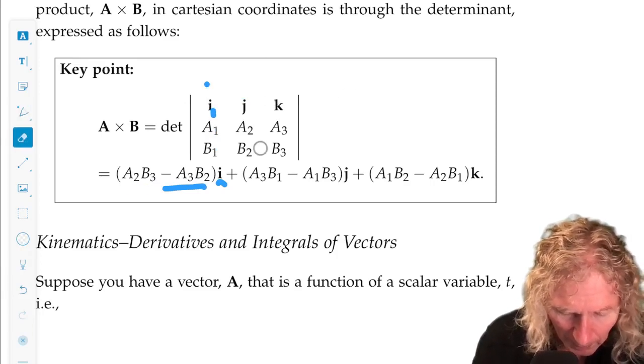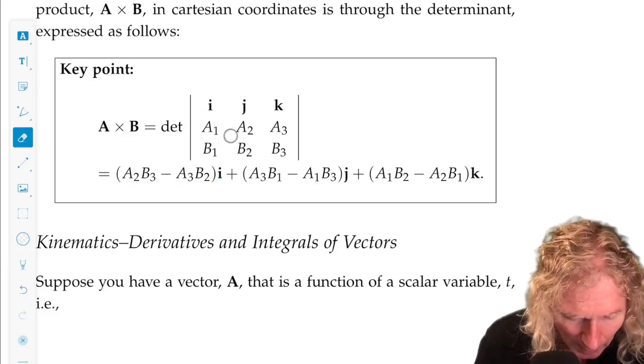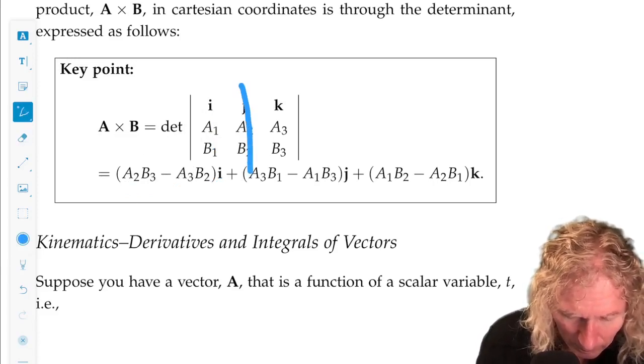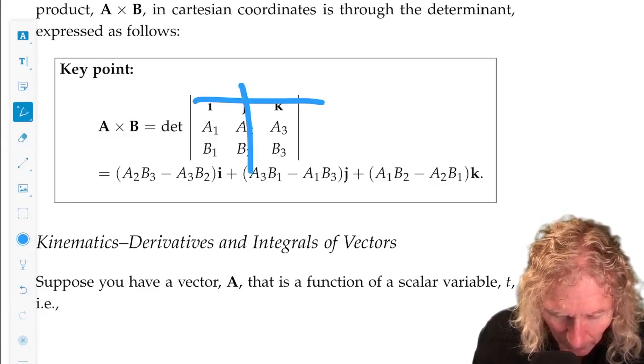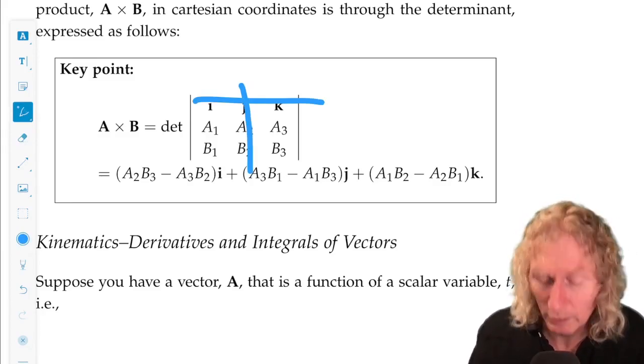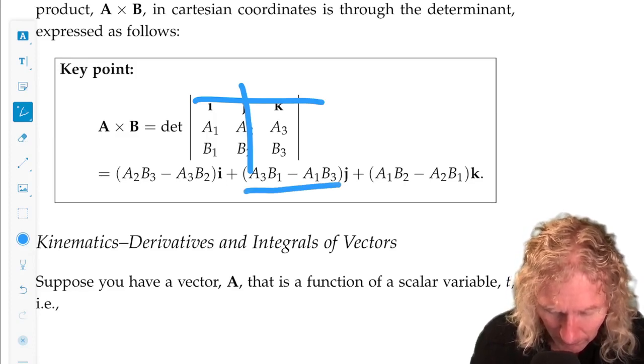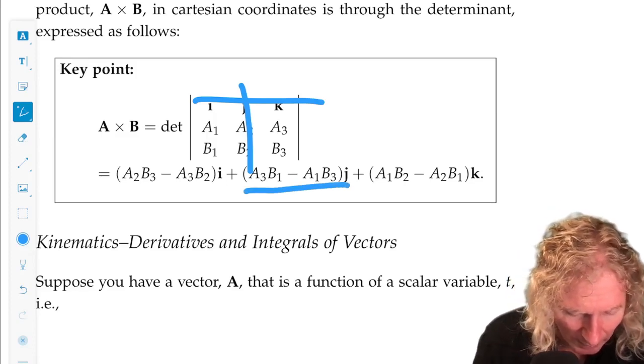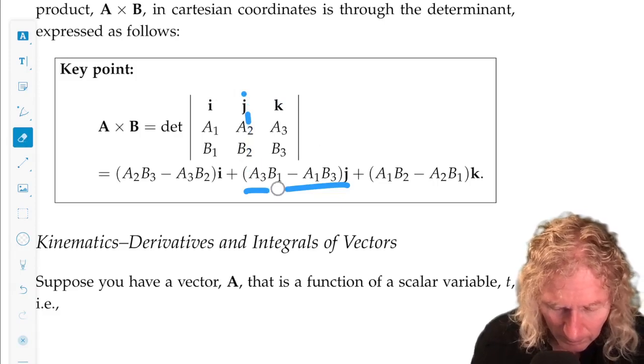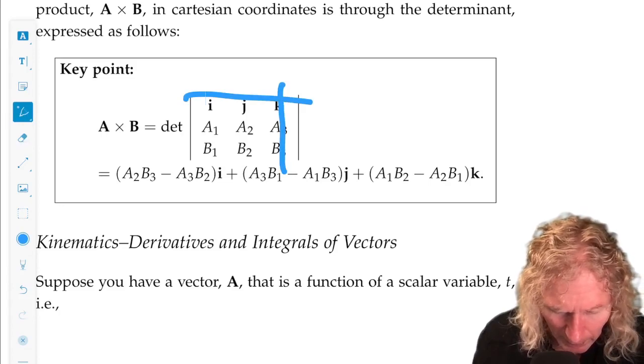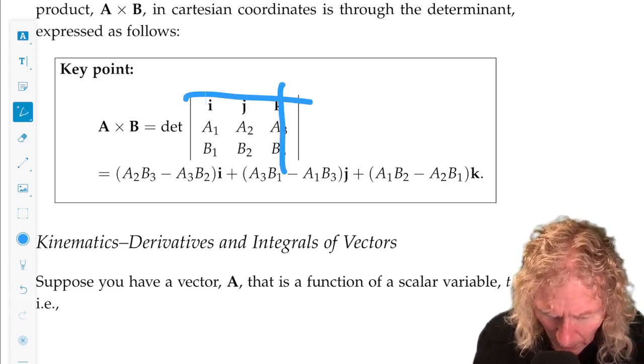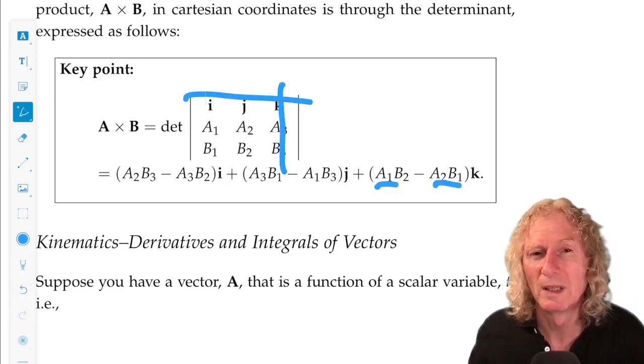And the j, the middle minor is A1B3 minus B1A3, but there's a minus sign because these alternates. So that's what you get for the next one. And the final one is straightforward. For k, it's A1B2 minus A2B1.